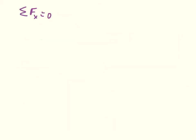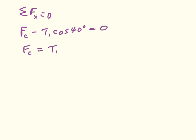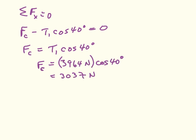Now let's look at the forces in the X direction. There's equilibrium in the X direction as well, so the sum of the forces in the X direction has to be zero. The force of compression to the right — taking that as positive — minus T1 times cosine 40 degrees must equal zero. So the force of compression must be equal to T1 times cosine 40 degrees, which works out to 3,037 Newtons.